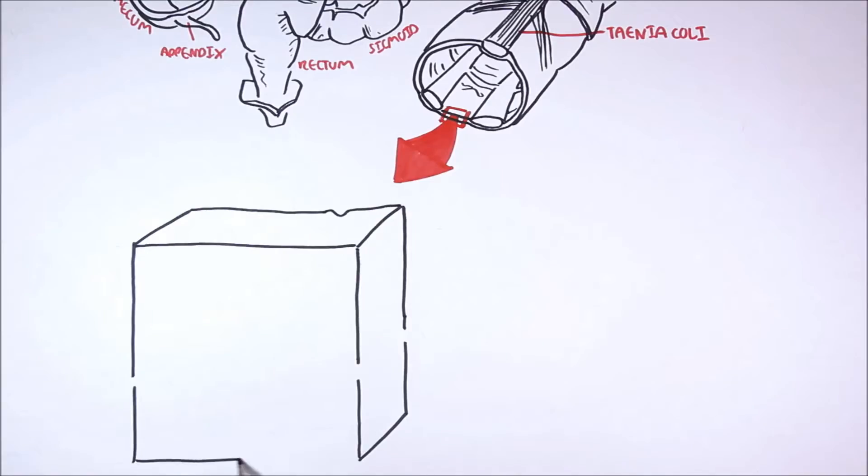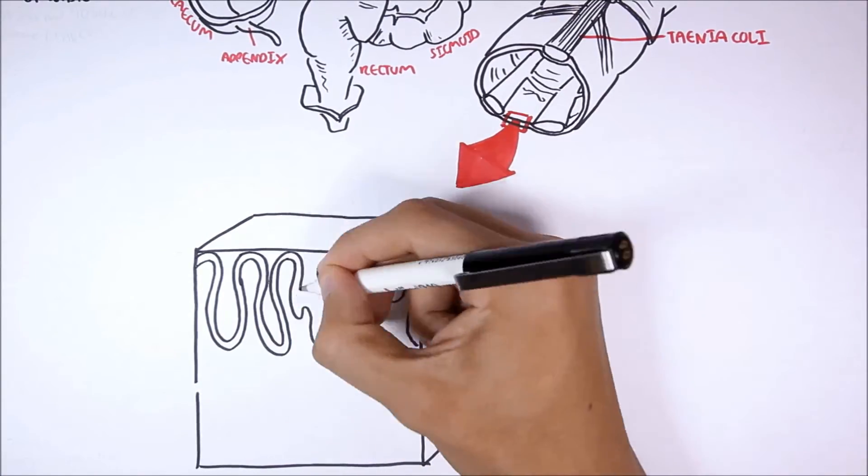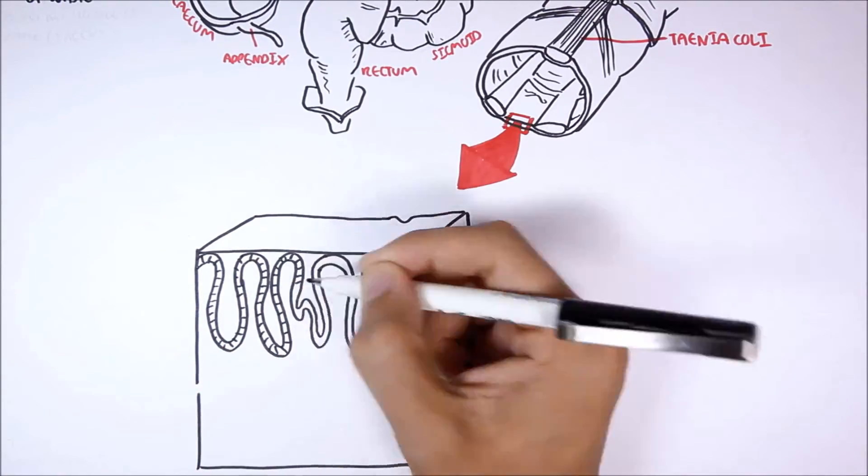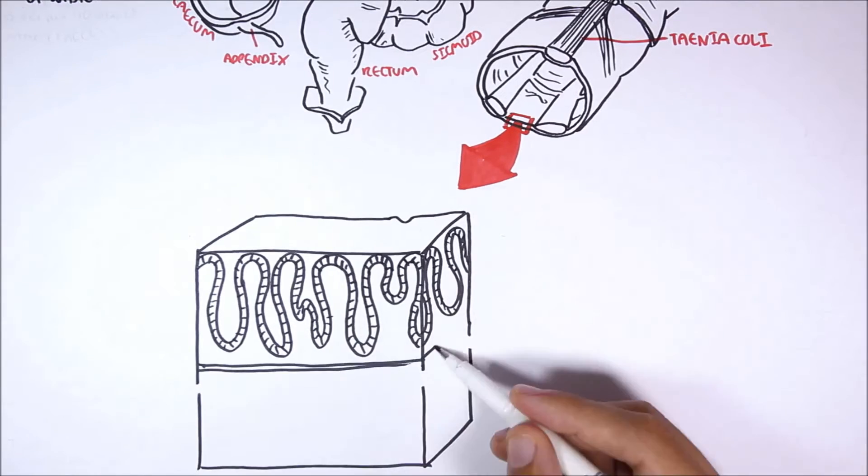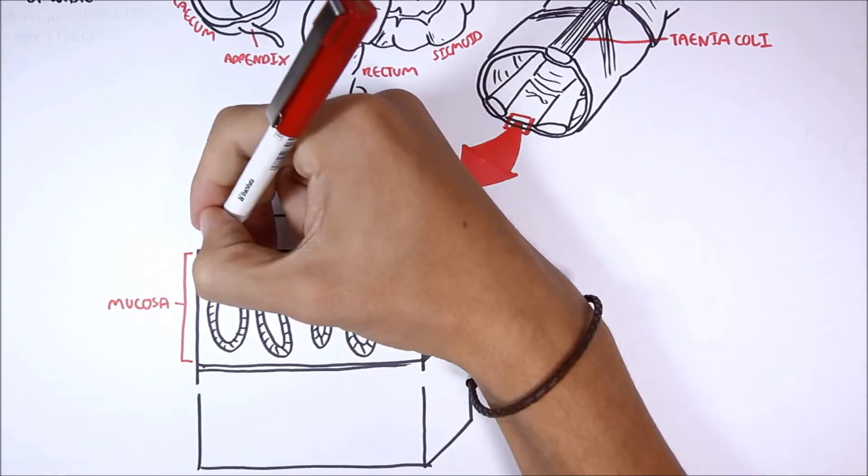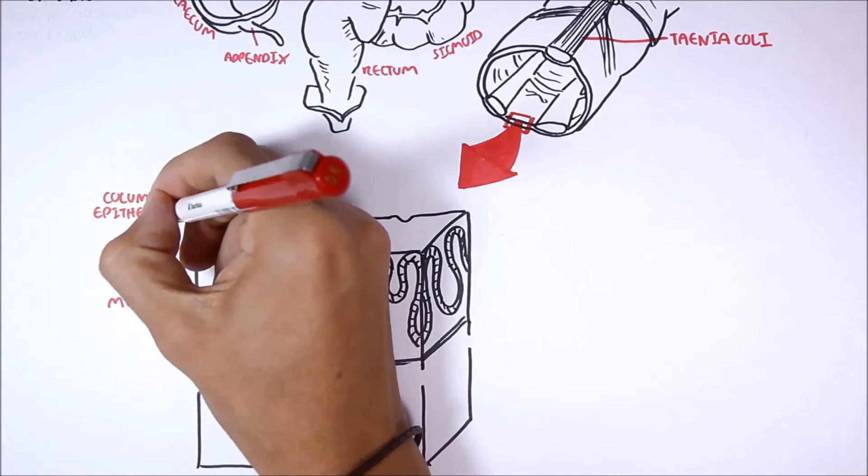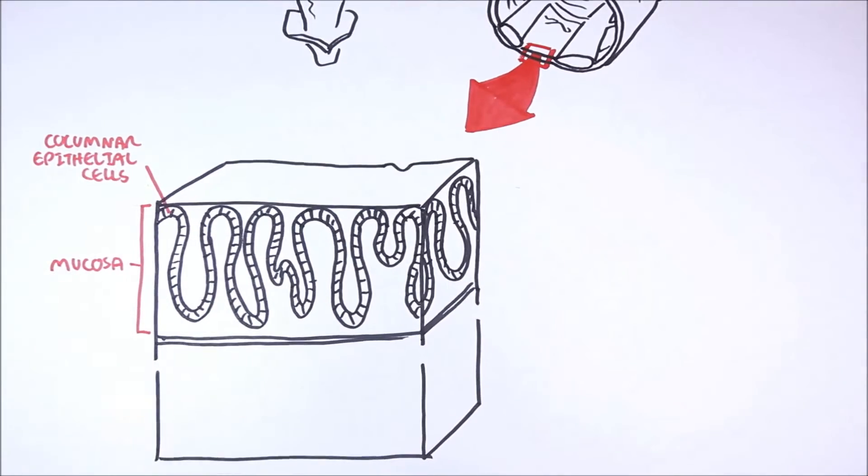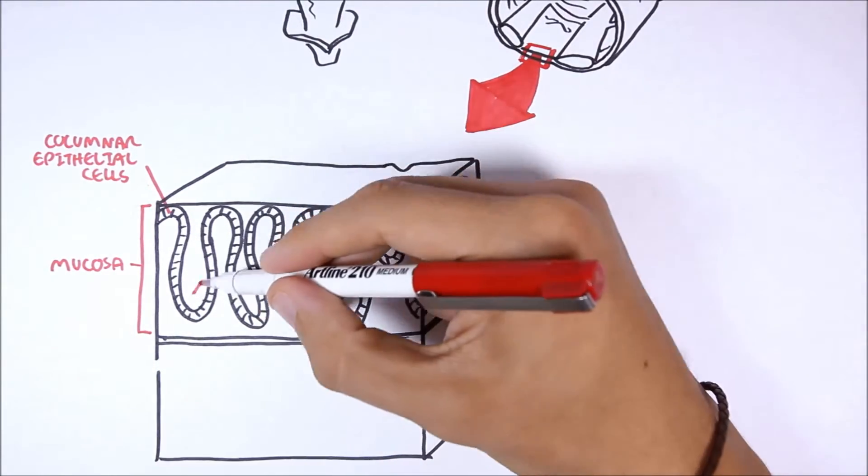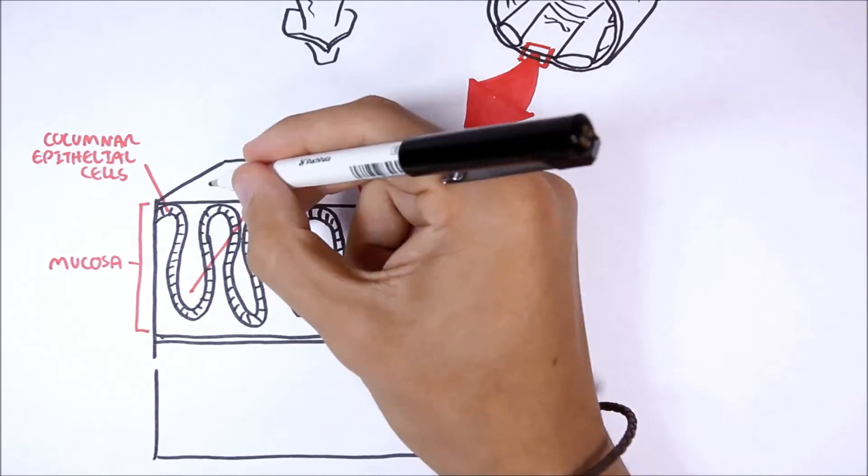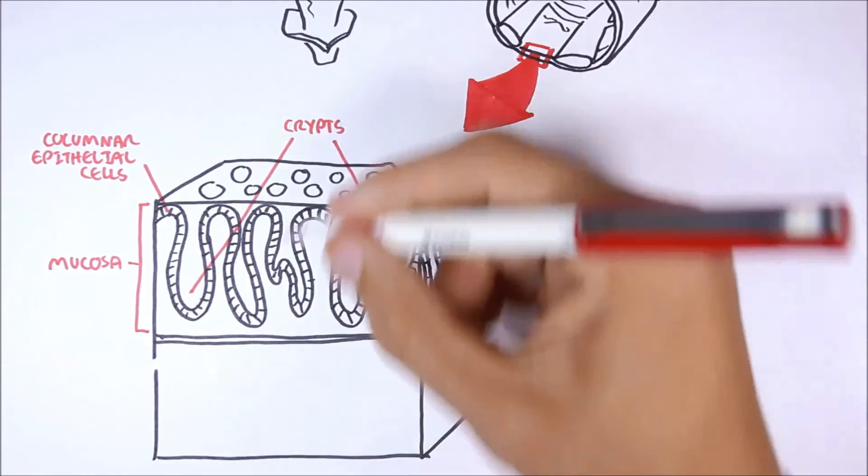Now, let's look at the layers of the colon. The very top layer of the colon, closest to the lumen, is the mucosa layer. These are the colon cells, which are mostly columnar epithelial cells. And these cells, they form crypts.